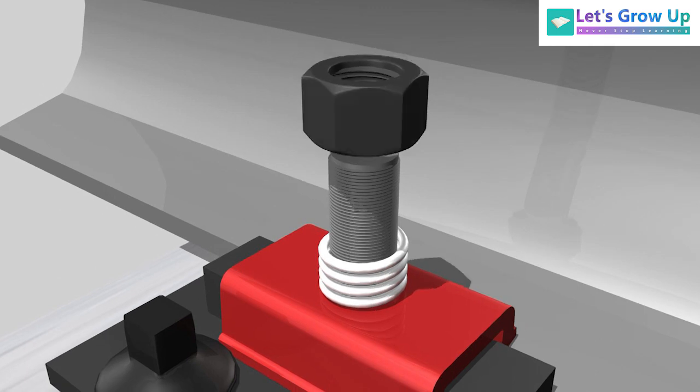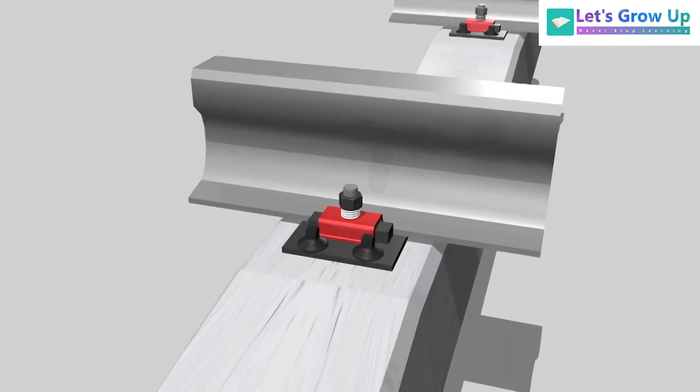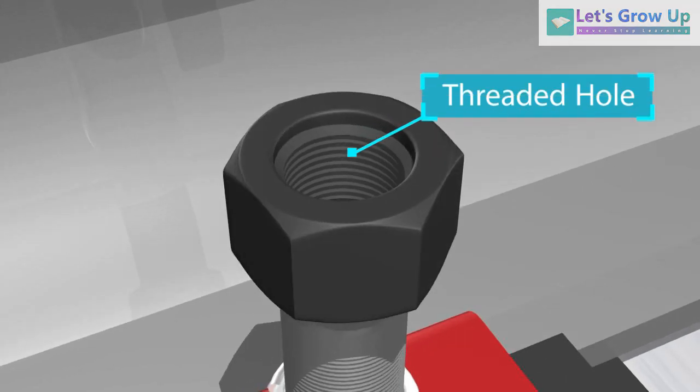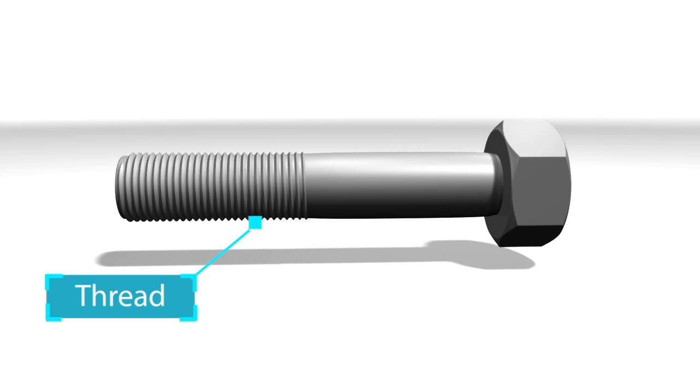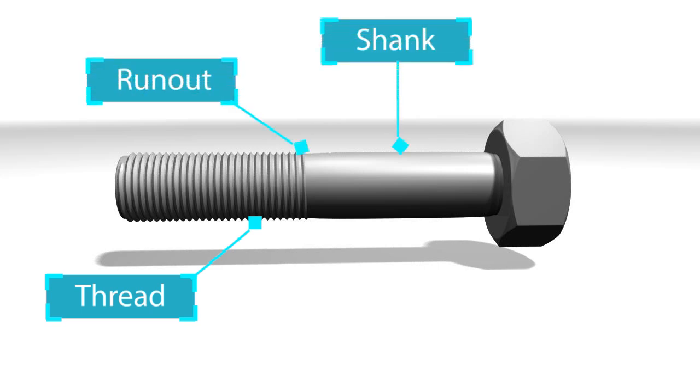A nut simply consists of a basic threaded hole. A bolt consists of thread runout, shank radius, and head.